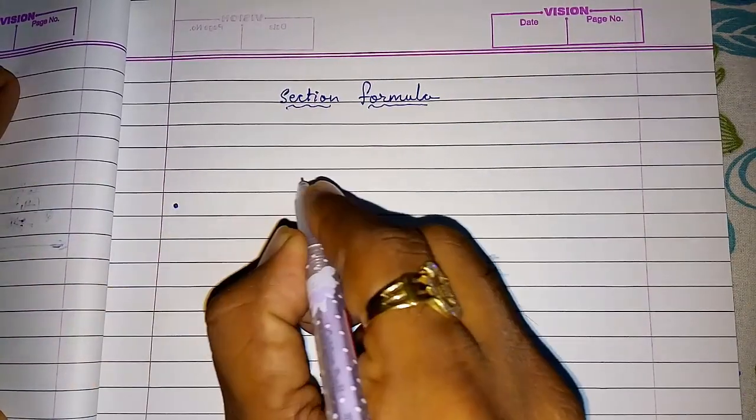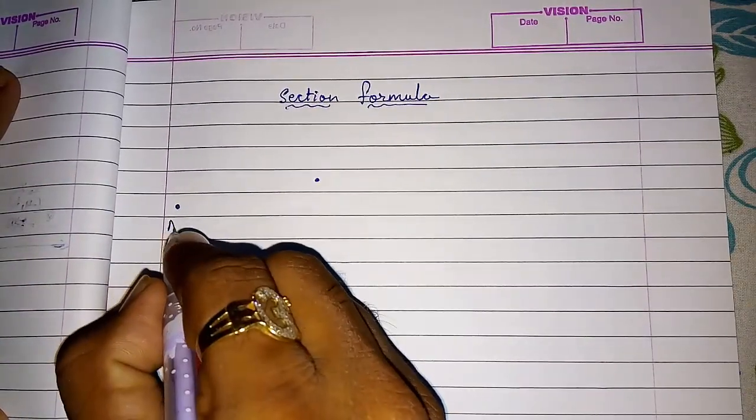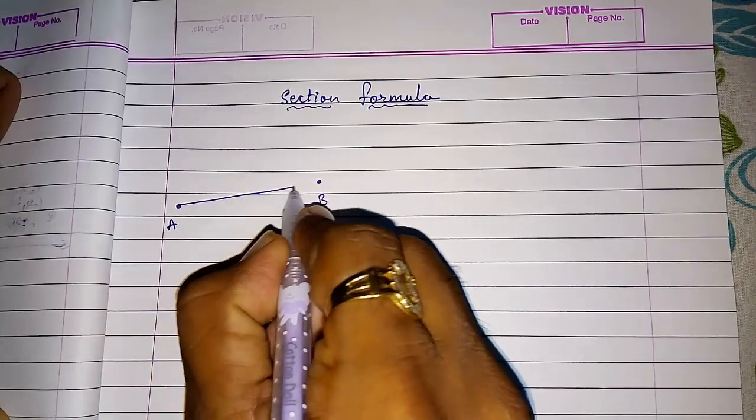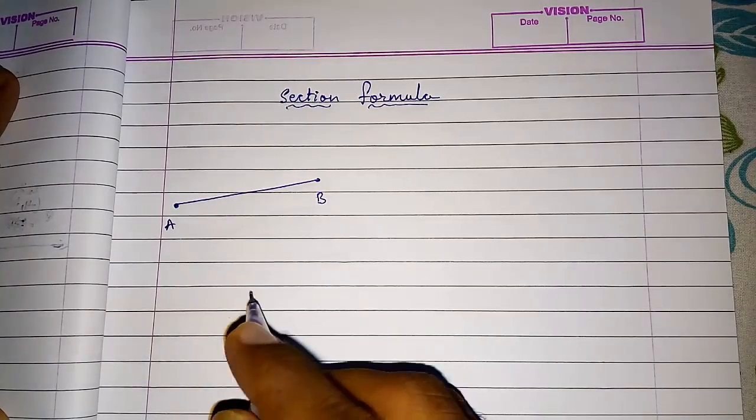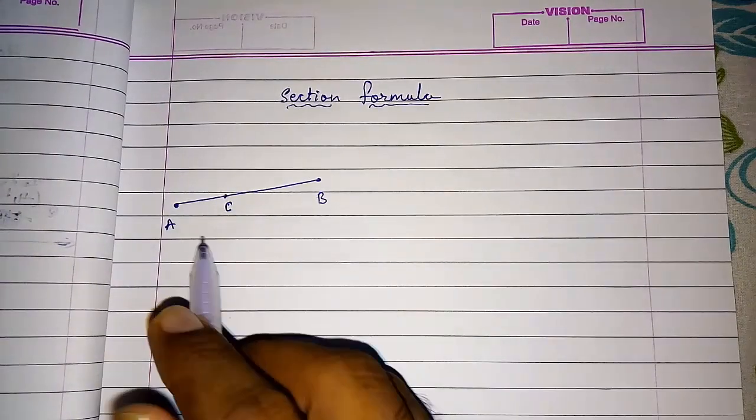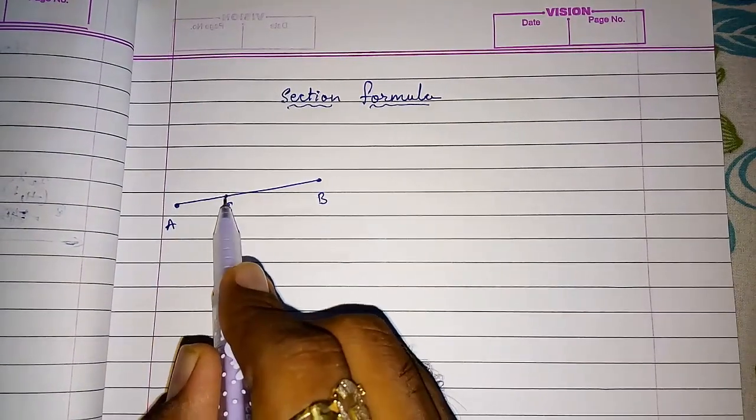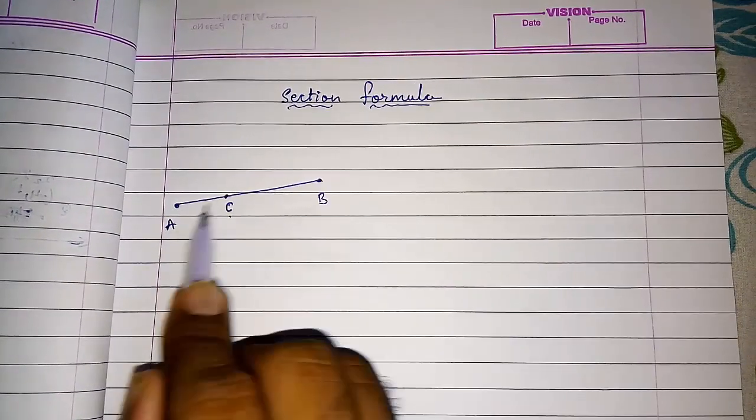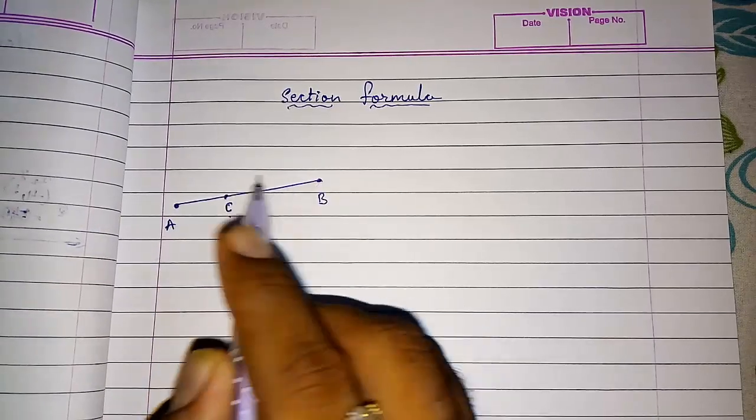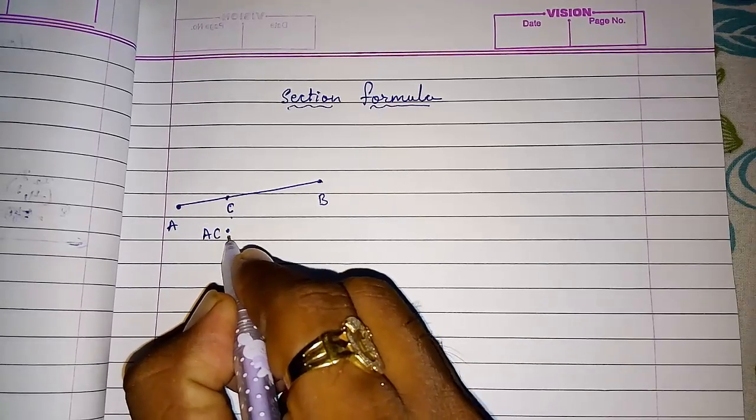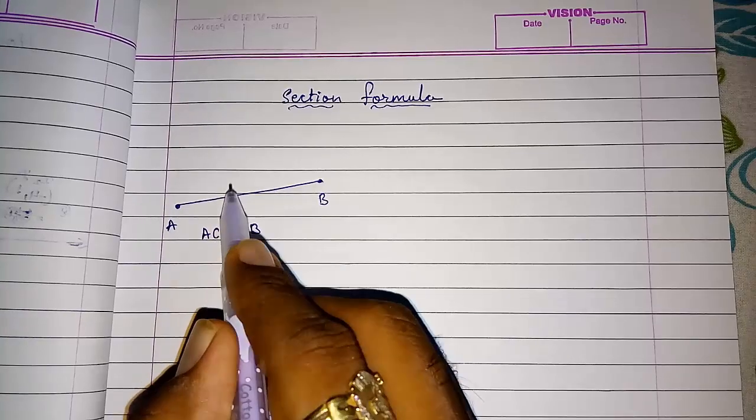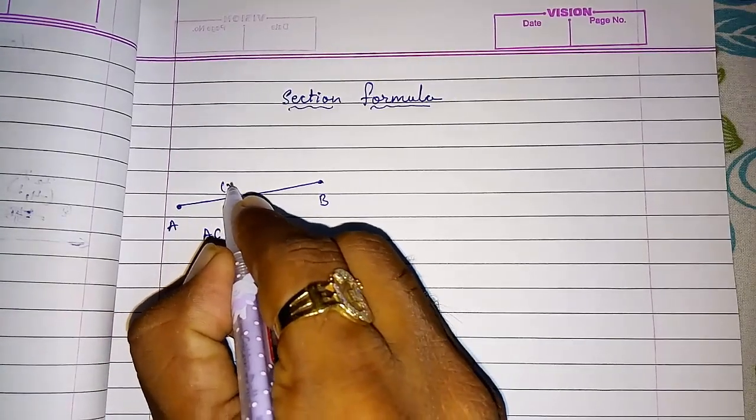Whenever two coordinates are given to you, suppose this is A and B and you are getting a line. Sometimes they are putting a point other than A and B on the line, that is C. What does this C do? C divides this line AB into two parts, that is AC and CB.